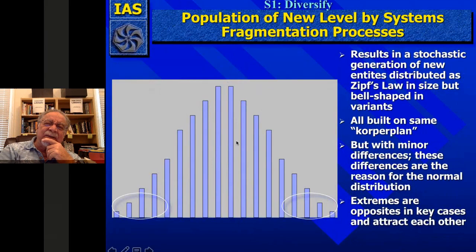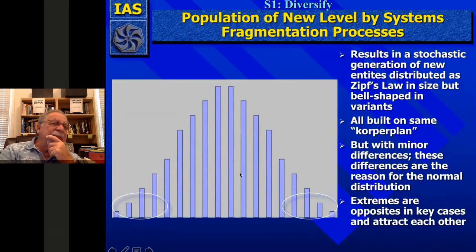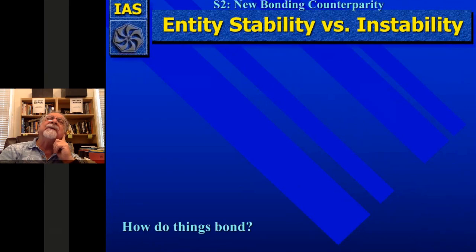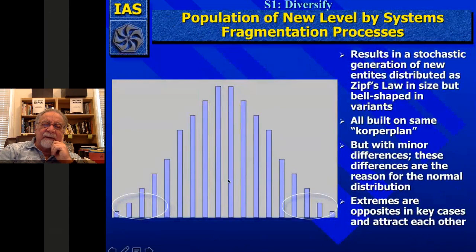Most intra-level objects have variation imposed not by reproductive genetic mutations and sexual recombination, but by probabilistic normal distributions. This is not Zipf's law, because that leads to a long-tail distribution in power laws — I think that is between levels of complexity, not within a level. Within a level you get a normal distribution. These are all built on the same corporate plan or architecture — it's based on that fundamental counter-parity which gives rise to that level. We're within a level here.